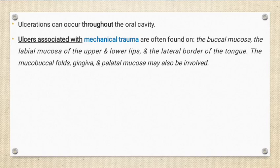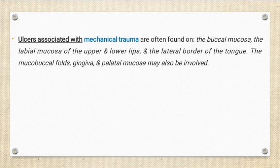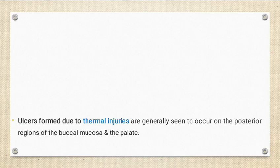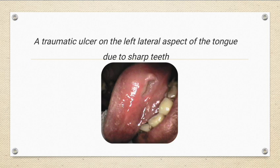Ulceration associated with mechanical trauma is commonly seen on the buccal mucosa, labial mucosa, upper and lower lips, and the lateral border of the tongue, which is one of the most common locations. In children, the most common cause of traumatic ulcers is electrical burns, seen at the lips and commissural areas. Thermal injuries can be seen at the buccal mucosa and palate. Here you can see a single deep ulcer on the left lateral border of the tongue due to a sharp tooth, with indurated borders — typical criteria for traumatic ulcer caused by a sharp tooth.